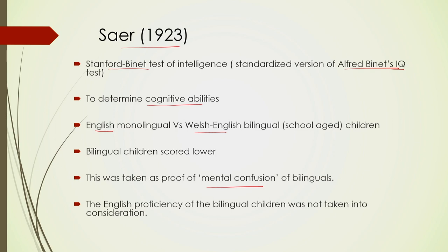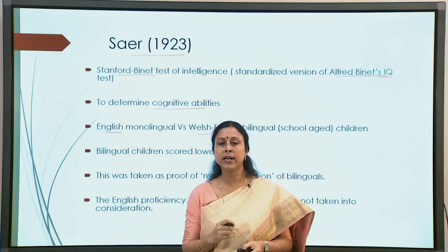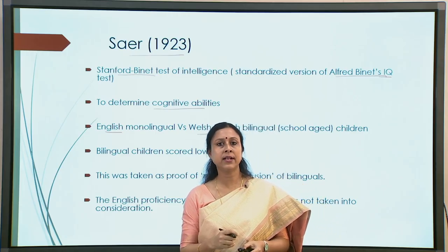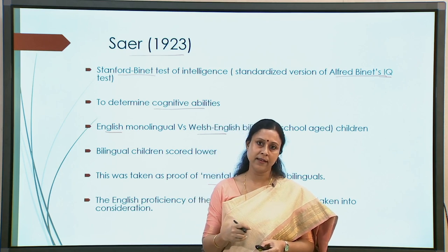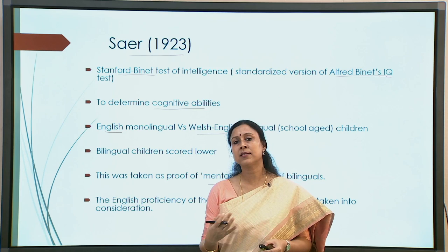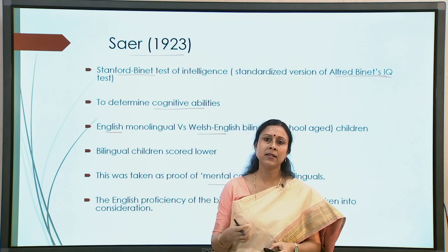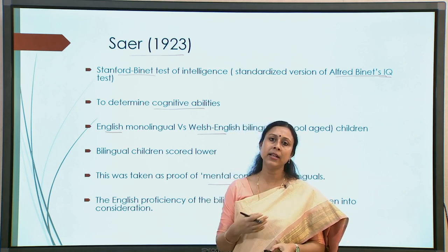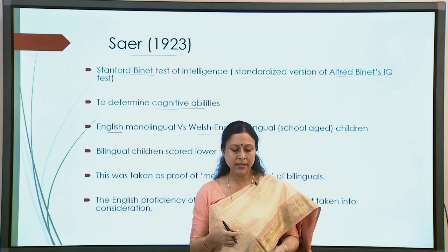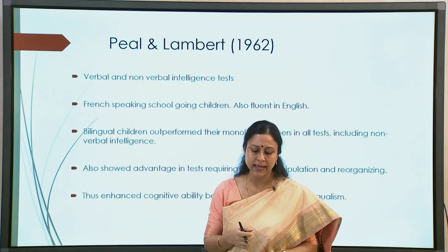However, in this 1923 study, the English proficiency of the bilingual children was not taken into account. Today, when we do any kind of such study, every single variable is measured — L1 proficiency, L2 proficiency alongside IQ, and any other variables that might impact the outcome. But this was 1923, and that is how it was done at the time.